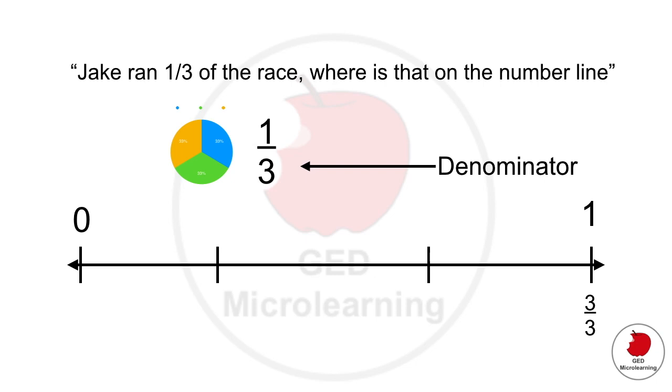And that means that your 0 value is actually going to be 0 over 3. So then the next segment is going to be 1 over 3, one third, and the following two thirds. So if they tell us that Jake ran one third of the race, and where is that on the number line, the correct position would be there.